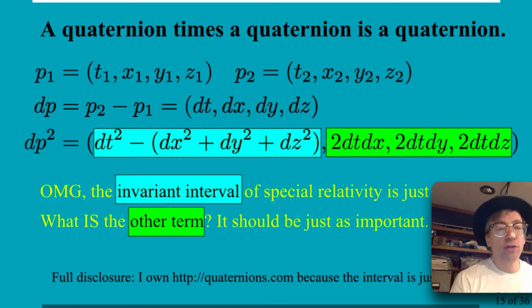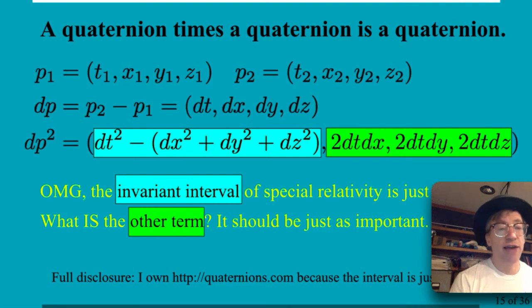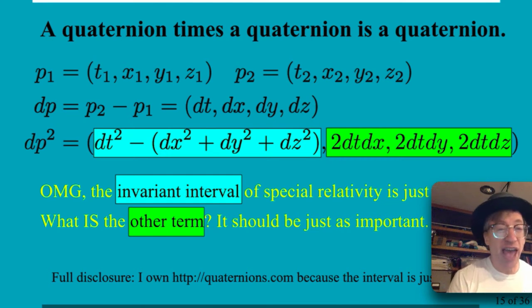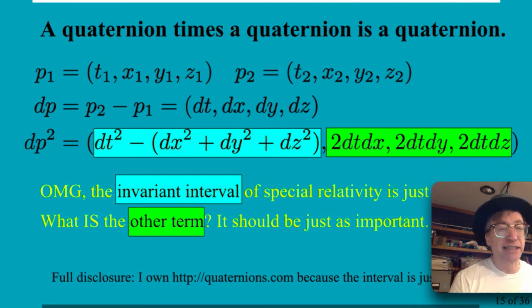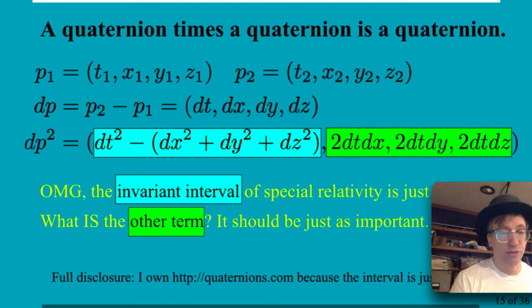The disagreement about those other terms is useful because it provides information about how the observers are moving relative to each other. If two observers only reported that they agreed about the interval and you asked their relative speed, they wouldn't have an answer — that's a problem, because they have the information. If you keep the space-times-time terms sitting right next to the interval, you can say they were moving along this y direction — that's a complete story.